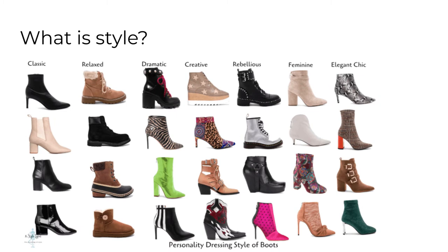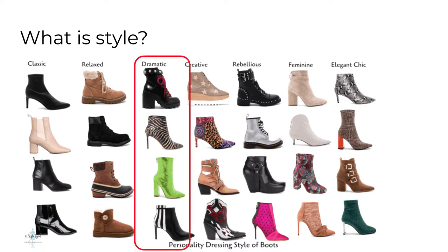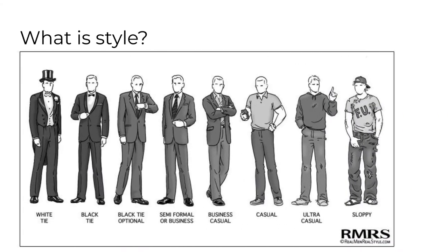Humans spend a considerable amount of time categorizing styles. Here's an example with women's boots categorized by personality. All 28 of these items are boots. Their essential substance is the same, but these four are distinctively dramatic. Style isn't the substance of something; it's how that substance is presented. Here's another fashion example, but this time categorized by formality level. All have the same basic substance, but this one is distinctively sloppy.